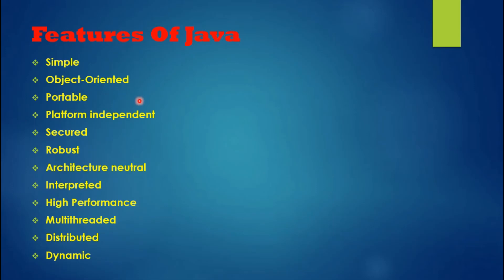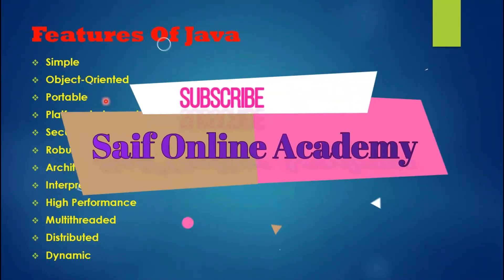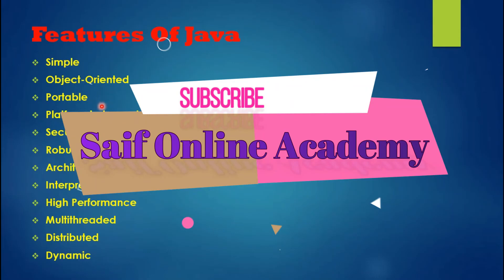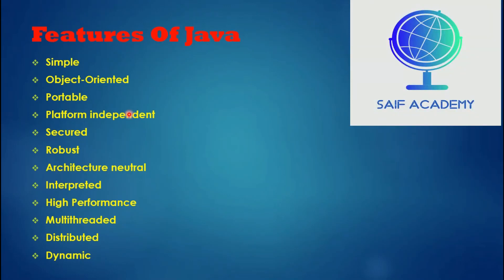Java is portable. Portability means you can write code once and run it on any machine. Java is platform-independent, meaning code written on one platform can run on Linux, Unix, Mac, or Windows without modification.